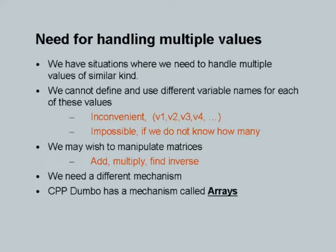So we construct an additional abstraction which most programming languages provide for — that abstraction is called arrays. Just like you have simple data types such as integer and float, so far we have declared integer variables x, y which can hold one value each. Array is a notion which can collectively hold multiple values. This is the need for handling multiple values. We have situations where we need to handle multiple values of a similar kind — the key is similar kind, not one value that is an integer and another that is a name and another that is a floating point number.